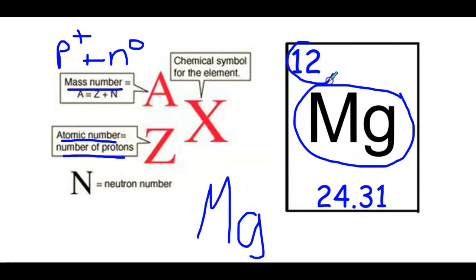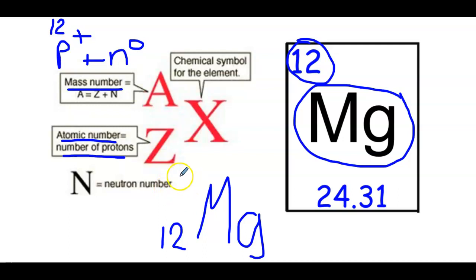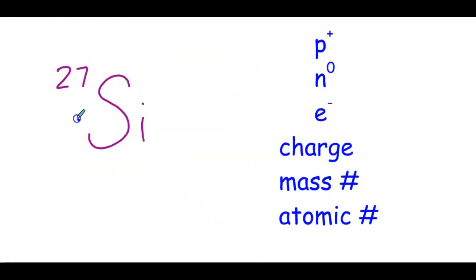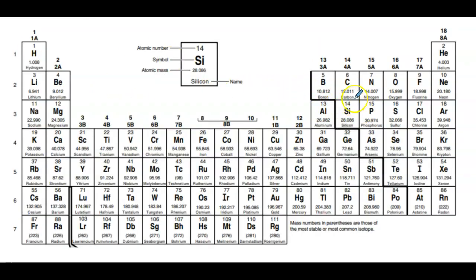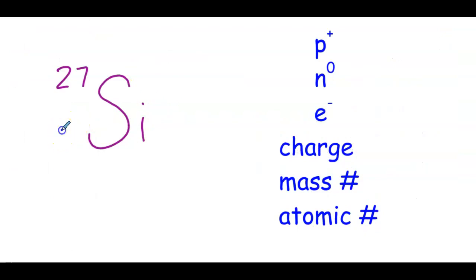For example, if I had magnesium — MG goes in position X. The atomic number goes at the bottom left, and it tells me the number of protons that magnesium has: 12 protons. I would need to know how many neutrons I have in order to get the mass number, which goes at the top left. So if I had 12 neutrons, I add those together and I would have a mass number of 24 — and that's what would go up there. In this example with silicon, we are missing the atomic number. The good news is we can find it by looking on the periodic table — finding the symbol SI, which is silicon, right there. The atomic number is 14.